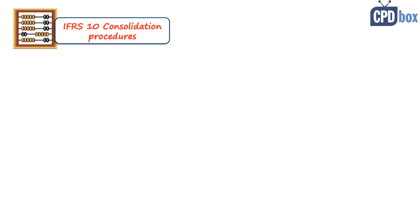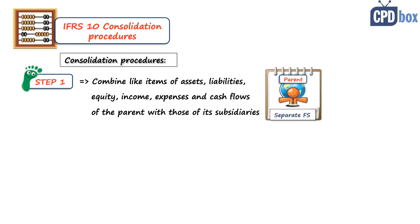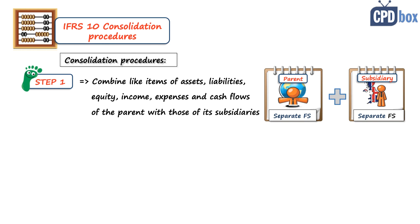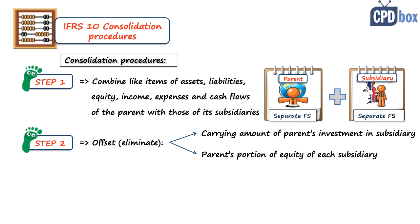Let me briefly describe the consolidation procedures required by IFRS 10. Step number one: combine like items of assets, liabilities, equity, income, expenses, and cash flows of the parent with those of its subsidiaries — combine simply means add up. Step number two: offset or eliminate the carrying amount of the parent's investment in a subsidiary against the parent's portion of equity of each subsidiary.